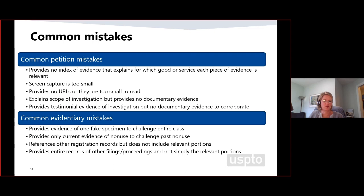What you all came here to find out is what are we seeing — what are the common mistakes? What do we want petitioners to start doing? Number one: start giving us an index of the evidence. Make it a separate page. Label the evidence with the petition and match it to the index — Exhibit A, Exhibit B — that will make it much easier to cross-reference what the evidence is supposed to show non-use for.